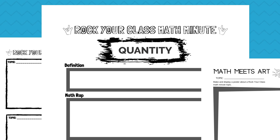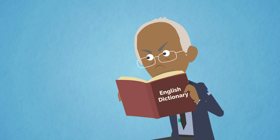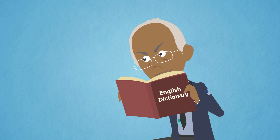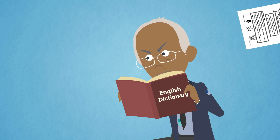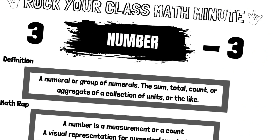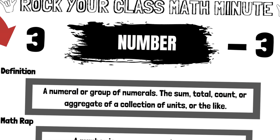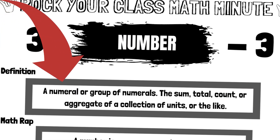Quantity. What does the dictionary say? The property of magnitude involving comparability with other magnitudes.